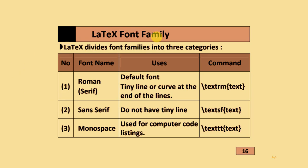Regarding LaTeX font families: LaTeX divides font families into three categories. The first is Roman, also called serif — it uses the default font with tiny lines or curves at the ends of strokes, giving it a decorative appearance. The second is sans-serif — it does not have tiny lines at the ends of characters, meaning straight lines with no decoration. The third is monospace, used for computer code listings.